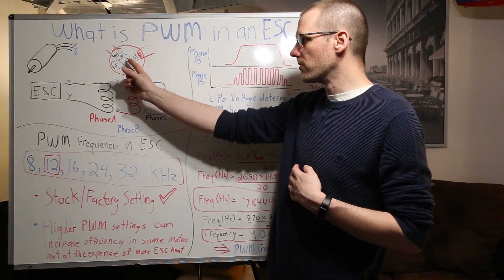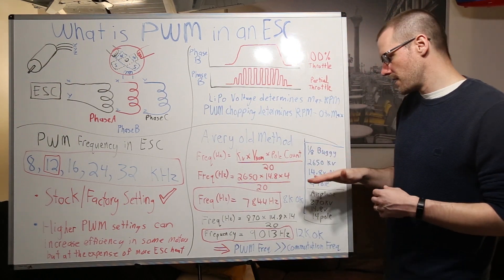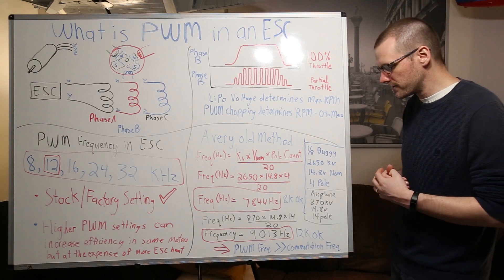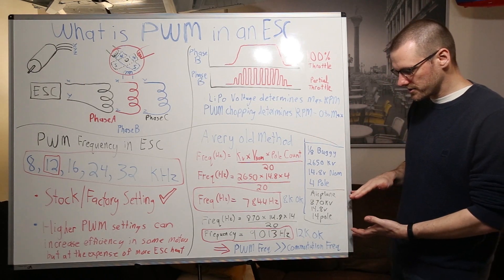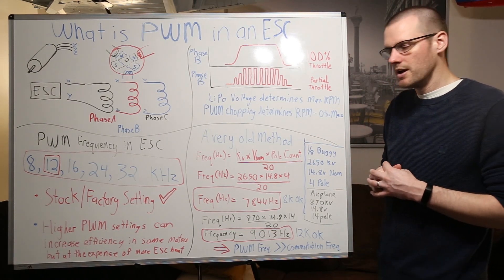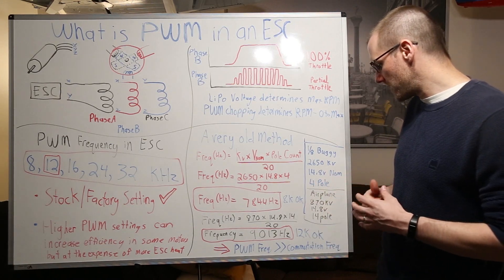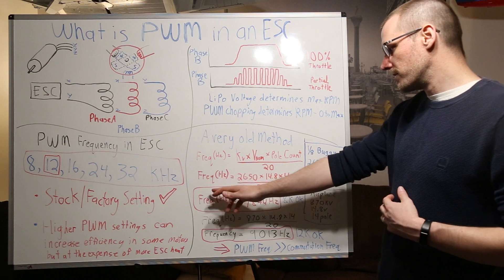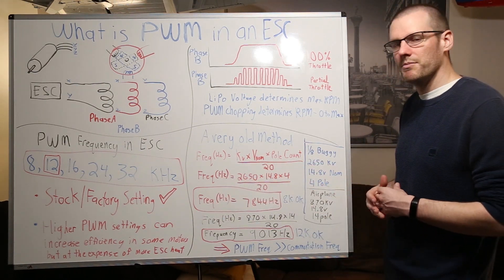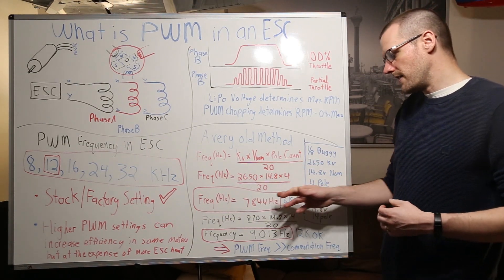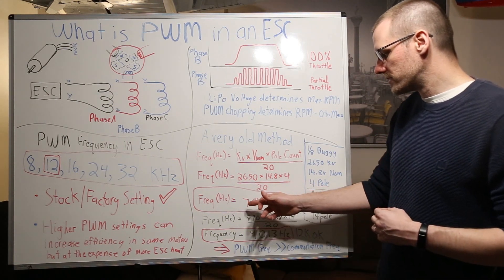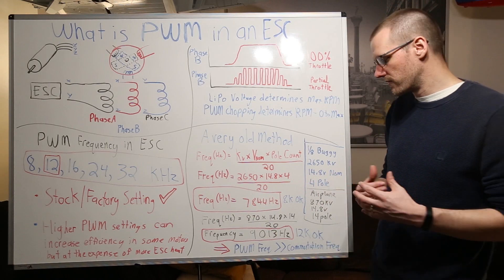When you're looking at an example we'll take an 1/8 scale buggy. I use this example quite often in the videos and I also have an airplane example here that it comes from an old setup that I've had since probably around 2012. When you go ahead plug the numbers in here you get 2650 multiplied by the 14.8 multiplied by 4 and divided by 20 and that works out to 7844 and that is in hertz. So 7.8 kilohertz is the overall value.